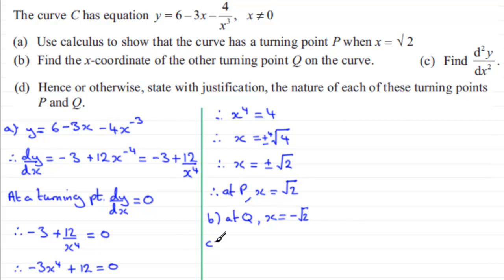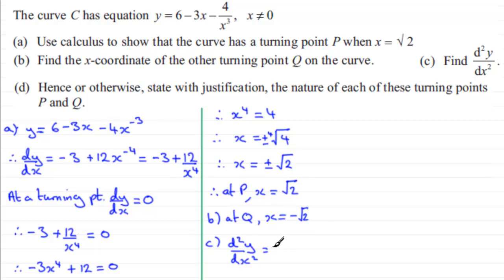For part C, we need to find d²y/dx², the second derivative of y. We differentiate dy/dx with respect to x. The minus 3 goes to 0, and differentiating 12x to the minus 4 gives 12 times minus 4, which is minus 48, with the power reducing by 1 to x to the power minus 5. So d²y/dx² equals minus 48 over x to the power 5.